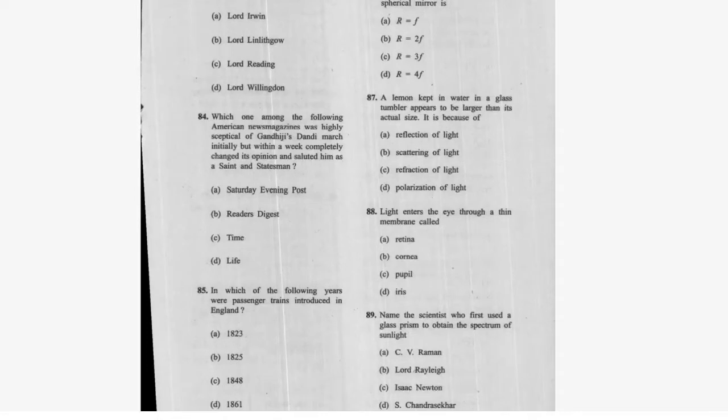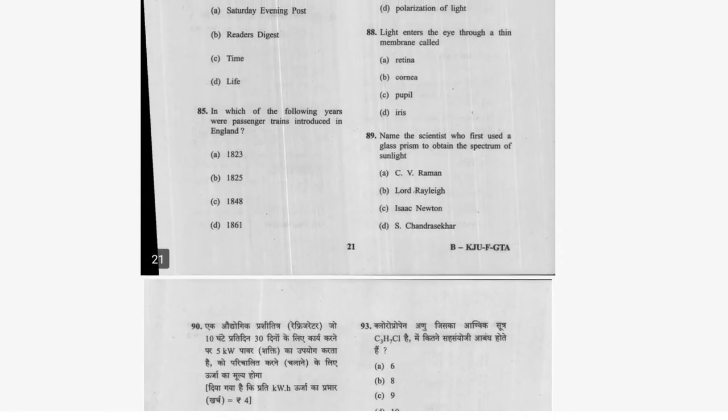Question 83: Which American news magazine was initially skeptical of Gandhi ji's Dandi March but within a week completely changed its opinion and saluted him as a saint? That is Time magazine — option C is correct. Question 84: In which year were passenger trains introduced in England? It's 1825 — option B.